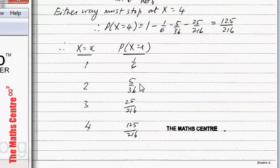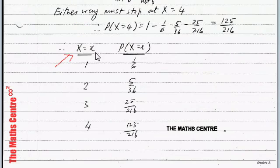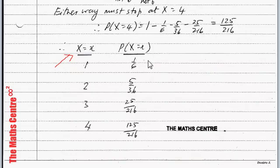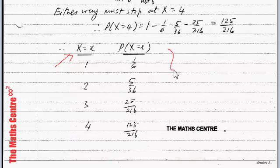Let's write down the values of X and the associated probabilities in the form of a table. X is the number of throws, so X can take one, two, three, and four. The probabilities: P(X=1) is one over six, P(X=2) is five over thirty-six, P(X=3) is twenty-five over two-sixteen, and we worked out P(X=4) as 125 over 216. I've set this in the form of a table to help in the calculations.